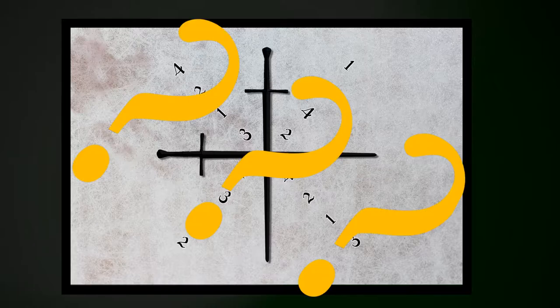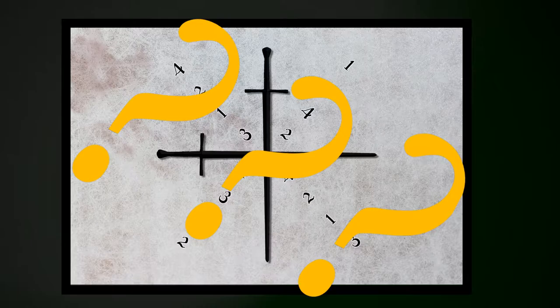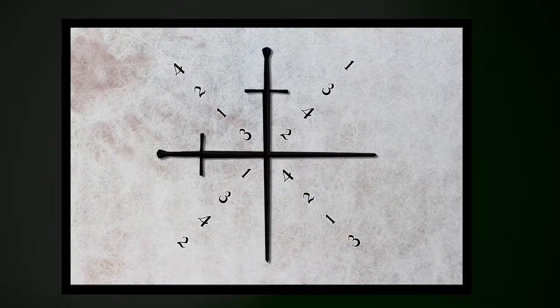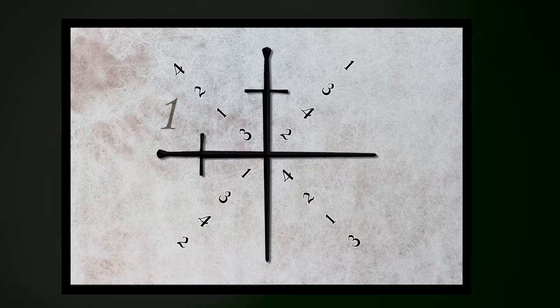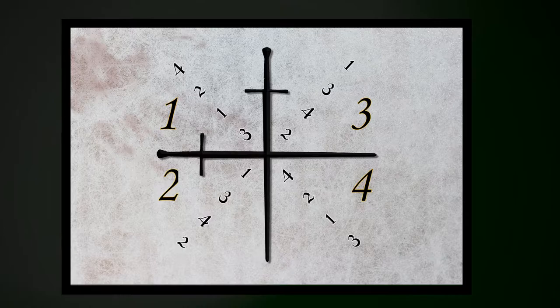Although it may look confusing at first, I find the easiest way to tackle this square is to focus on each section individually. There are four sections, however there are only two cutting patterns at play.